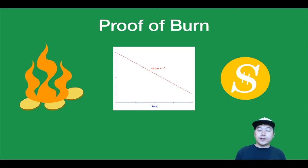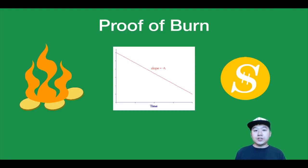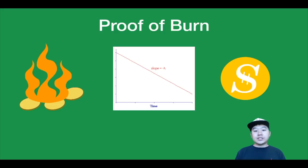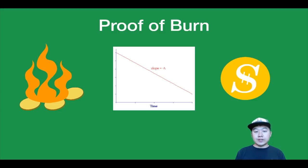Proof of burn is another very interesting one. The idea is that you have to send coins to a burn address — which is irretrievable after you do so — in order to get the chance to mine. You can either burn the project's native currency or other coins like Bitcoin, which in the speaker's opinion is not great since Bitcoin is already deflationary and a lot are already lost. The chance that you get selected to mine increases with the amount of coins you burn, and your stake decreases over time, so you have to continue to burn more and more to maintain the same odds.